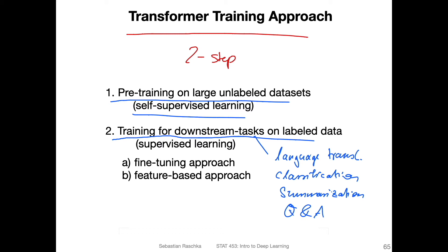For downstream tasks, you would have a smaller labeled dataset for supervised learning. Think of the movie review dataset we used before: pre-training could be pre-training the model on thousands of books in a self-supervised fashion, and then we can use our small movie review dataset — which only consists of 100,000 reviews — and train the model on that. It's kind of related to transfer learning, which we also talked about before.